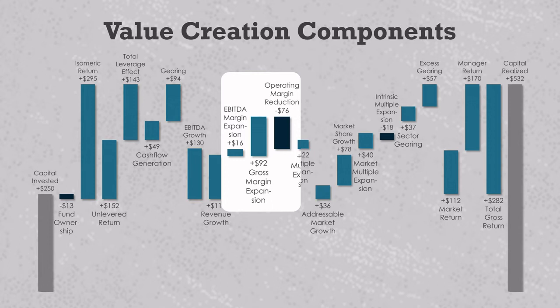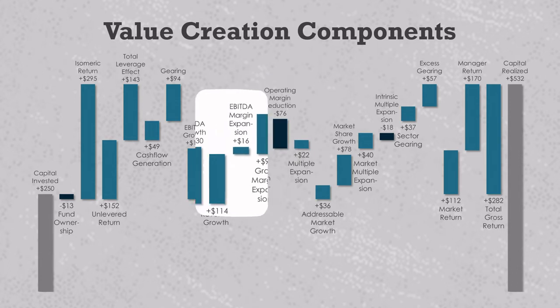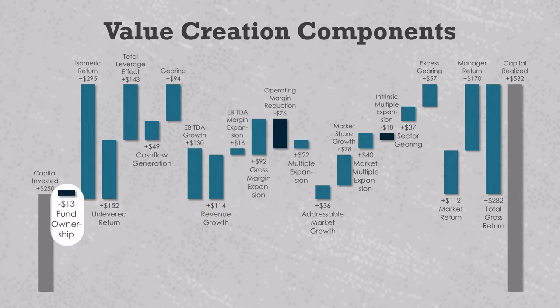Unfortunately, most of this gets wiped out by $76 million of negative operating margin reduction because there's an increase in SG&A as a percentage of revenue. That highlights some of the P&L driven value creation. But what if the GP claims to have a deal structuring advantage? For example, they usually invest with participating preferred securities. This should cause the GP to often own a higher percentage of company equity at exit compared to entry, revealing itself as a pattern of positive value creation from fund ownership impact. Here, fund ownership impact is negative, which indicates dilution. It's not necessarily a bad thing — it often happens in successful deals where management option pools kick in and expand.